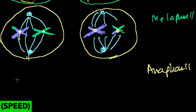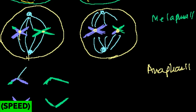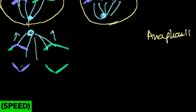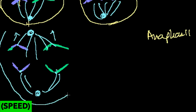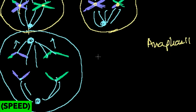So each chromatid gets pulled to opposite sides, coordinated by the centrosomes. Anaphase always involves the pulling apart of chromosomes — or pulling apart of something. This is also happening simultaneously in the other cell. Just like in mitosis, as soon as the sister chromatids are split apart, they are now referred to as chromosomes or sister chromosomes. The other cell is a bit cleaner because the crossover didn't occur in that one.